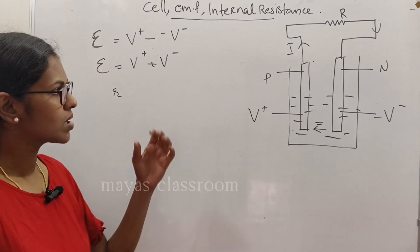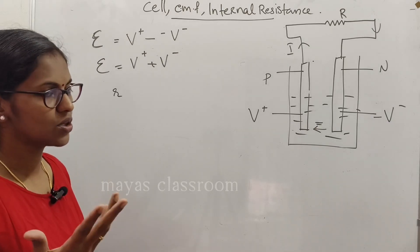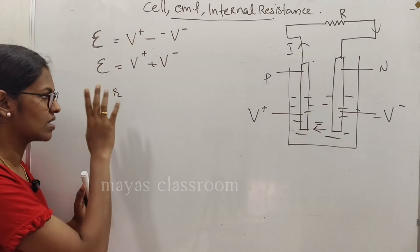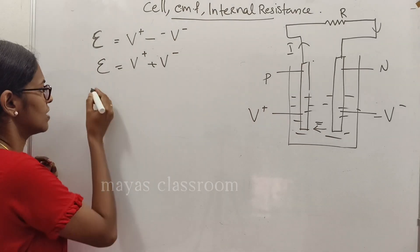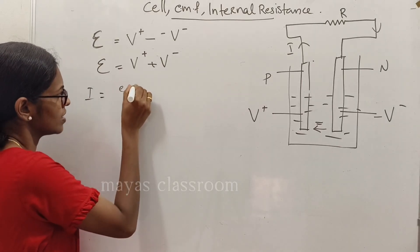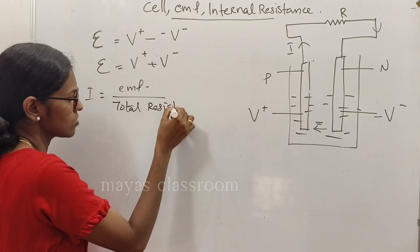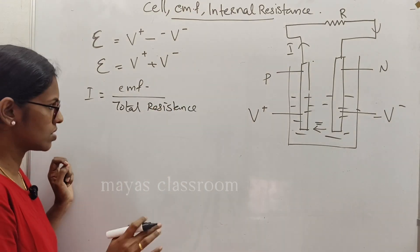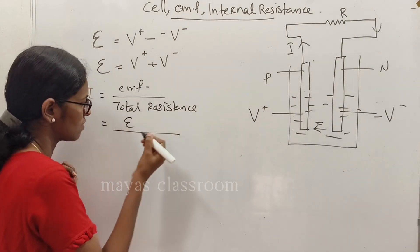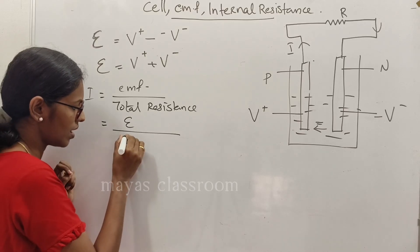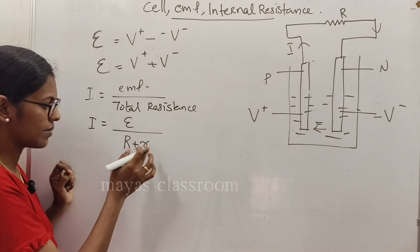If we consider external resistance R and internal resistance r, the current is given by: I equals total EMF divided by total resistance. Total resistance equals external resistance R plus internal resistance r.